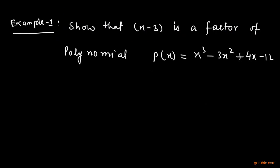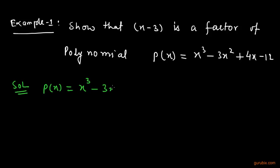We shall use the Factor Theorem to show that (x minus 3) is a factor of p(x) equals x cubed minus 3x squared plus 4x minus 12. First, we collect the given polynomial: p(x) equals x cubed minus 3x squared plus 4x minus 12.